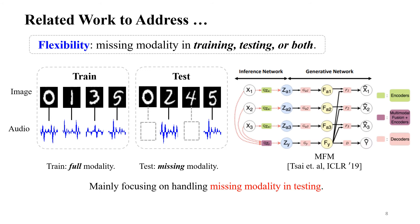There exists some work trying to address flexibility, but most efforts mainly focus on missing modality in testing. They assume all training samples are modality complete, while testing samples are allowed to be modality complete or incomplete. Their goal is to train a model that can handle testing with both types. The key idea is to mimic missing modality during training — for example, in MFM, they manually mask out some modalities and let the model predict the missing modality using all available modalities. During testing, the model can first estimate the missing modality and conduct multimodal testing.